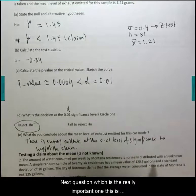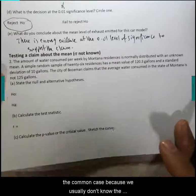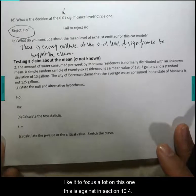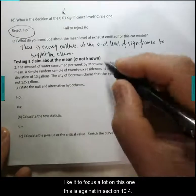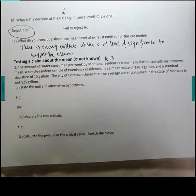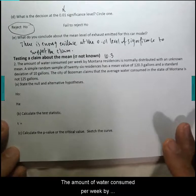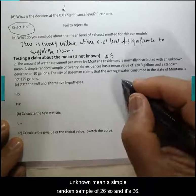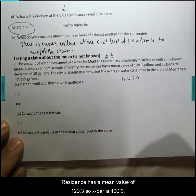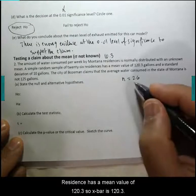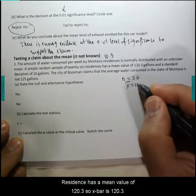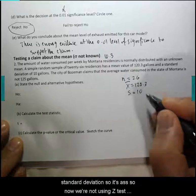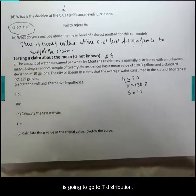Next question, which is the really important one. This is the common case because we usually don't know the population standard deviation, so I'd like you to focus a lot on this one. This is still section 10.3. The amount of water consumed per week by Montana residents is normally distributed with unknown mean. A simple random sample of 26 residents has a mean value of 120.3, so x-bar is 120.3, and a standard deviation of 10. He didn't say population standard deviation, so it's s. Now we're not using z-test, we're going to use t-distribution.